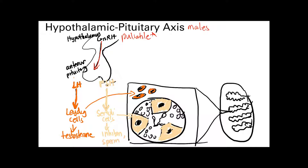The pulsatile GnRH acts on the anterior pituitary gland, causing it to make a bunch of hormones. Today we'll focus on LH and FSH, but the anterior pituitary also makes growth hormone, adrenocorticotropic hormone, thyroid stimulating hormone, and prolactin.